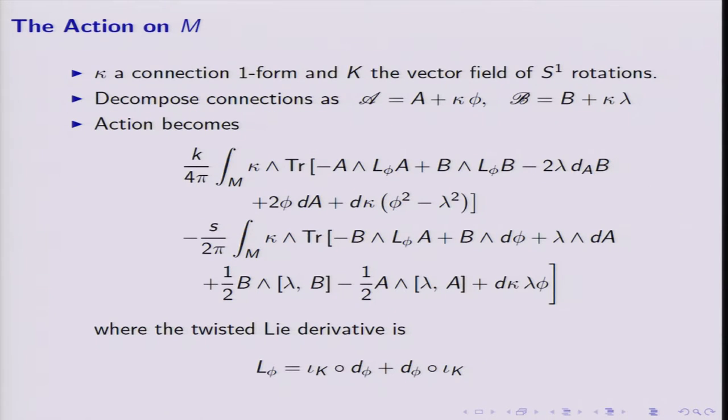So, well, I have a 3-manifold which is an S1 bundle. So I have a connection. That is a globally defined one form on it. K is the dual vector field of the S1 rotation. So that means that I have a way of globally decomposing all my fields. So I do. I write any connection as a connection which is horizontal, meaning that it has no component in the K direction or the Kappa direction. Sorry. These are one forms in the Kappa direction. And a component in the Kappa direction. You should think of this guy as living on the Riemann surface, as living on the base. Likewise, for the B field, we have the same. Of course, A and phi are anti-Hermitian matrices. B and lambda are also anti-Hermitian matrices.